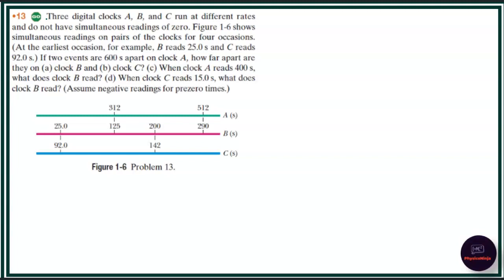Hey everyone, so this is question number 30. Let us see the solution of this question. Three digital clocks A, B and C run at different rates and do not have a simultaneous reading of zero.